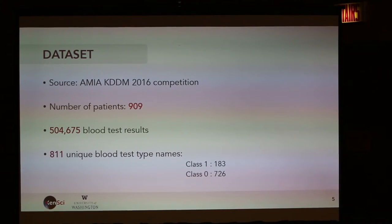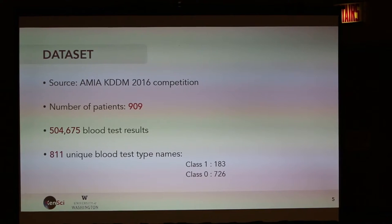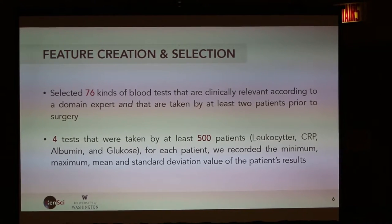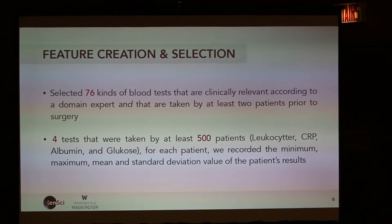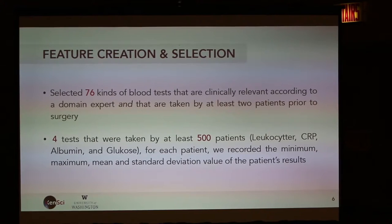There were errors in entering data, so there were variations in how the same test was recorded. Around 183 patients out of 909 had a surgical site infection. For feature creation and selection, we looked for a middle ground between clinical input from Amy — a clinician who gave us insightful information about what lab tests would help — and machine learning techniques like information gain and covariance with the output variable to see which lab tests had more significant predictive power.